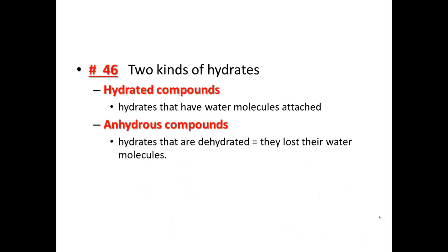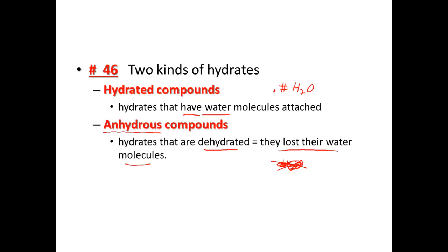Now we have two kinds of hydrates. Hydrated compounds — to be hydrated, you need to have water. Hydrated compounds or hydrates have water molecules attached, so they have the dot with however many waters. Anhydrous compounds are dehydrated — they have lost their waters, so they will not have waters attached. Anhydrous: no waters attached. Hydrates: waters attached. Remember, these are both ionic compounds.